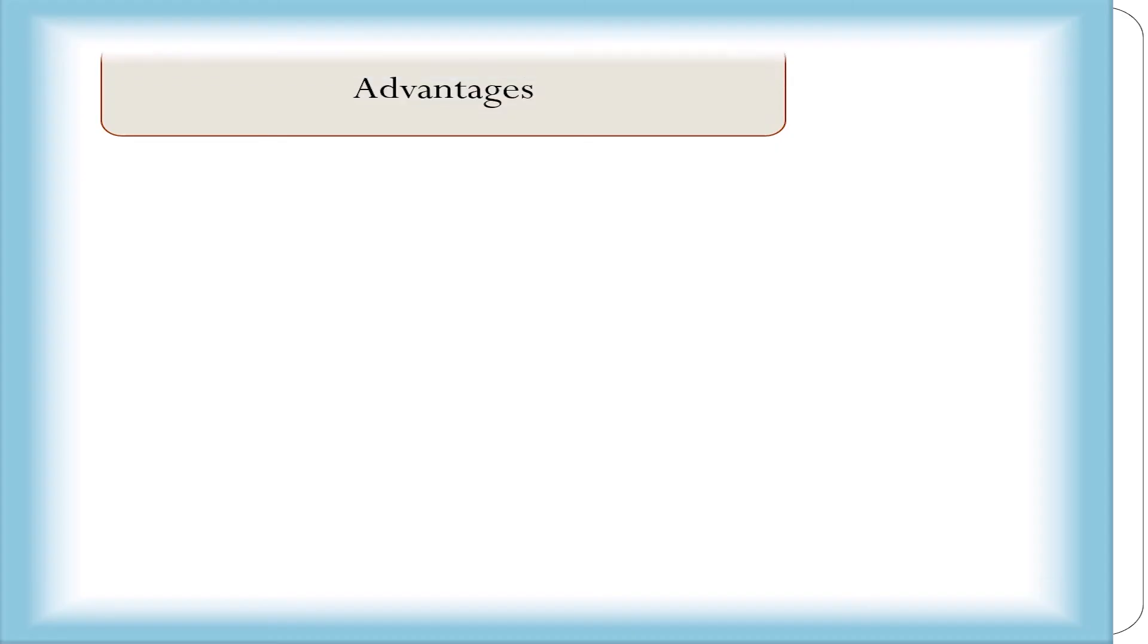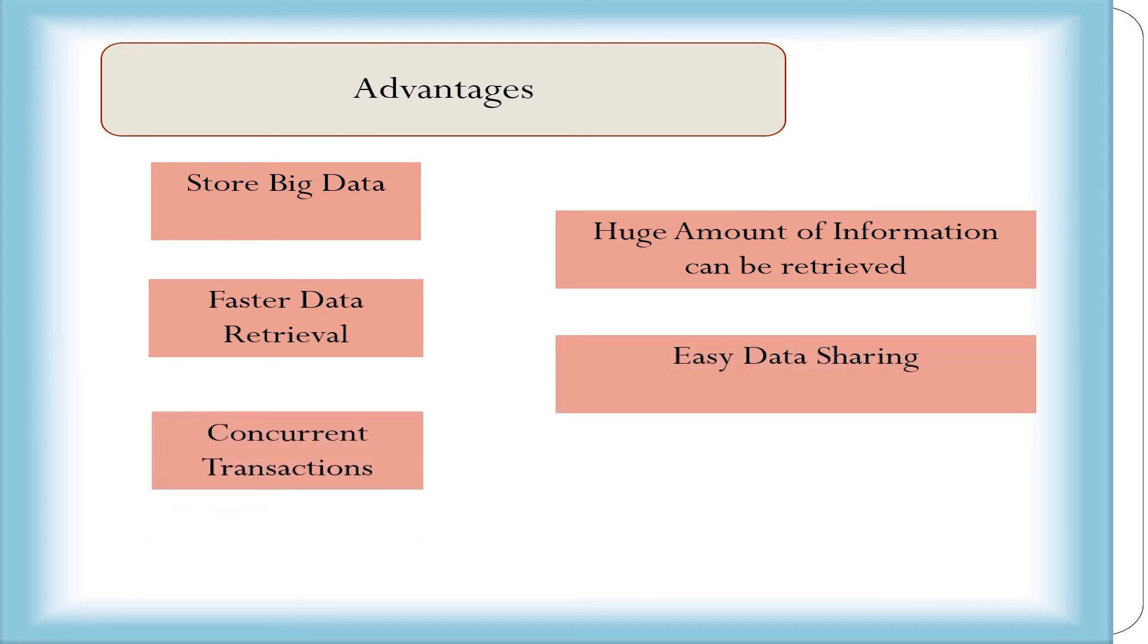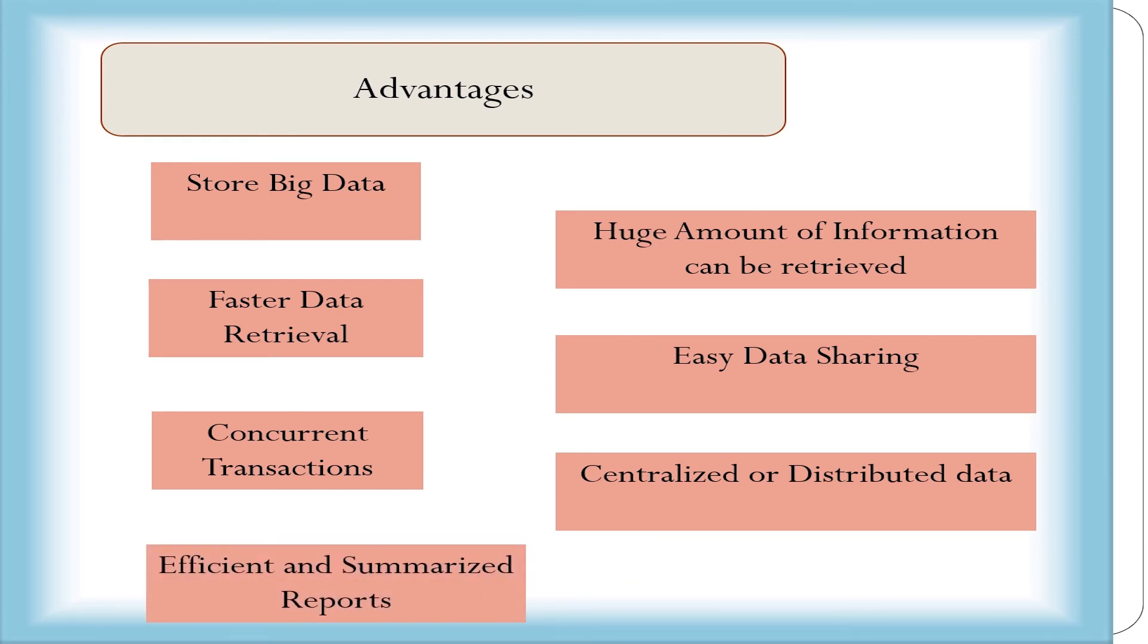Why we need to have an information system in an organization is an important question. Let's look at why we need to have information systems in an organization. We can store big data, retrieve huge amounts of information at a much faster rate, easily share data, concurrently perform transactions on data, keep data centralized or distributed across several locations, and design more effective and summarized reports.